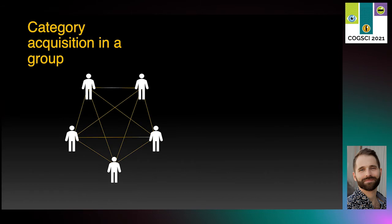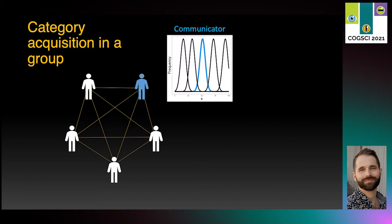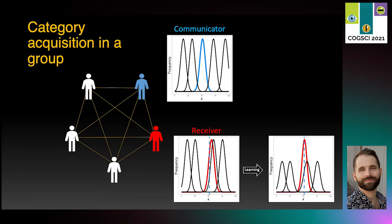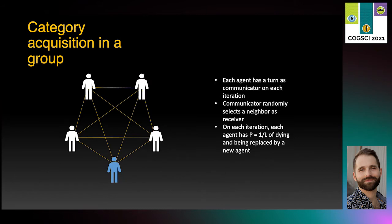To address this question, we adapted the category learning model from Toscano and McMurray to a group setting, which I'll show in schematic form here. We start with a fully connected network of agents. We select an agent in blue as the communicator first — the blue agent has a category structure and selects one category from their repertoire to sample a signal from. The blue agent then selects the red agent as a receiver, and the red agent has a different category structure. The red agent identifies the signal as belonging to its red category, then updates its category structure in response to the new information. We then select a new agent to act as communicator, and after each agent has had a turn, one iteration is complete. Agents can die with some probability on each turn and will be replaced by a newly initialized agent.